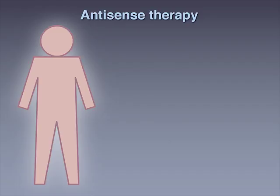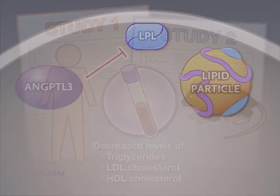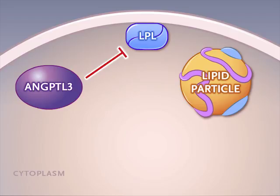Humans treated with the antisense oligonucleotide had significant reductions in triglycerides, LDL cholesterol, and VLDL cholesterol. Together, these studies show that antagonizing angiopoietin-like 3 in humans and in mice leads to decreased levels of triglycerides, LDL cholesterol, and HDL cholesterol, presumably by disinhibiting lipoprotein lipase. Further studies will be needed to determine the effect of this strategy on clinical cardiovascular outcomes. Full study results are available at NEJM.org.